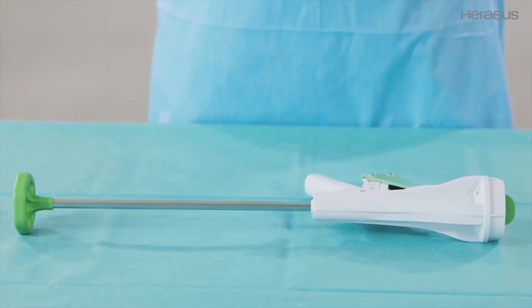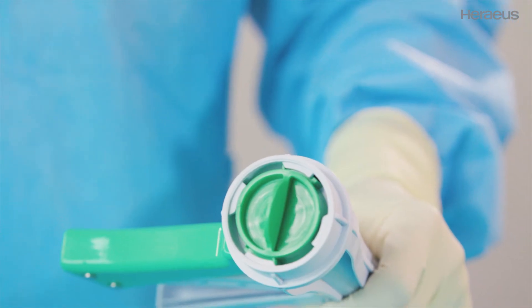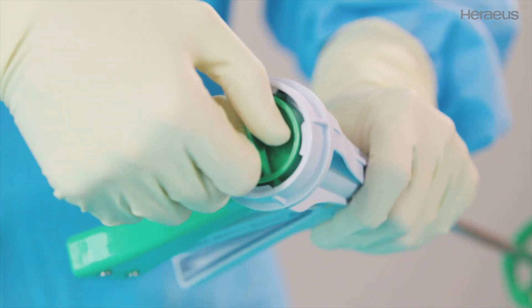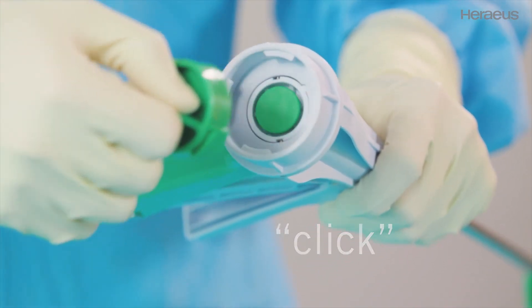Now, pick up the Palagon to attach the cartridge. Turn the locking cover counterclockwise until a click is heard. Then, release and remove.